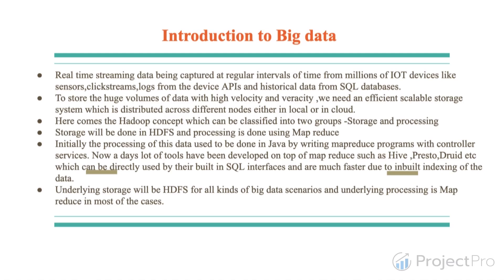Hadoop actually has two parts: one is storage, which is HDFS, and the other is processing, which is the MapReduce framework. With the assumption that we have an initial knowledge of Hadoop, HDFS, and MapReduce, we move further. Initially, processing of data was done directly in Java — many people in the industry developed Java programs for MapReduce as this Hadoop framework was emerging.